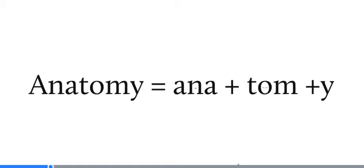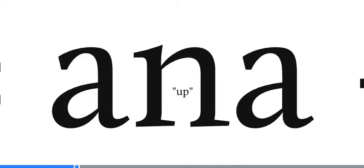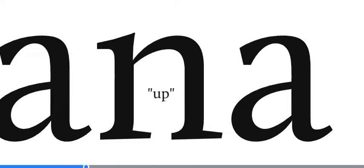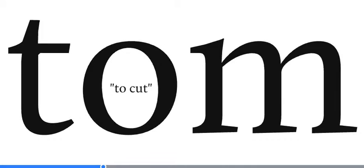To consider a word anatomy based on its etymology, we can break it down into two major parts, ana and tome, and the y at the end is an ending that makes it a noun. Ana is a prefix from the Greek that means in this sense up, which makes sense when we consider combining it with the root tome, which means to cut.